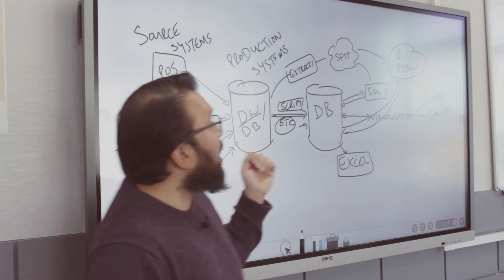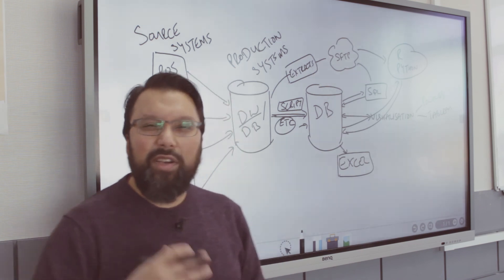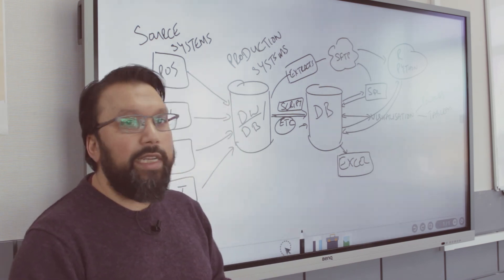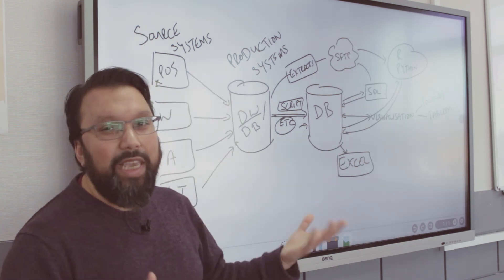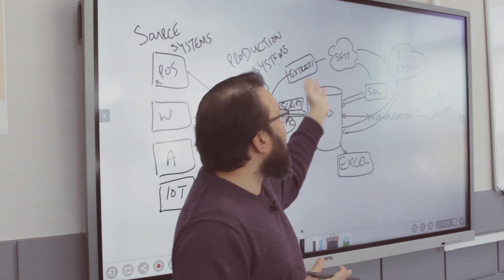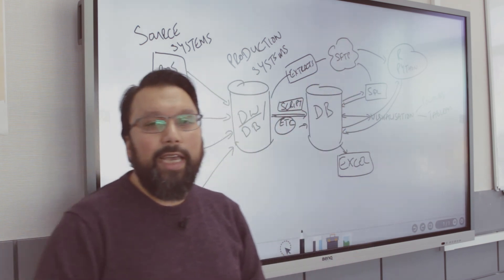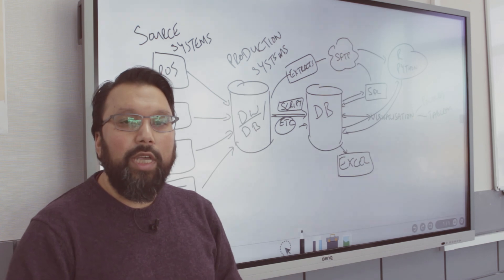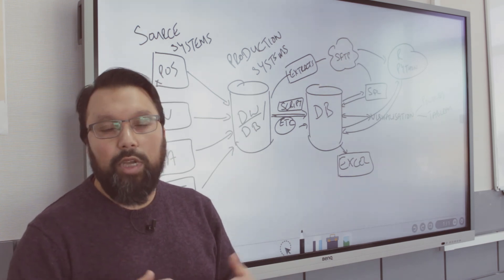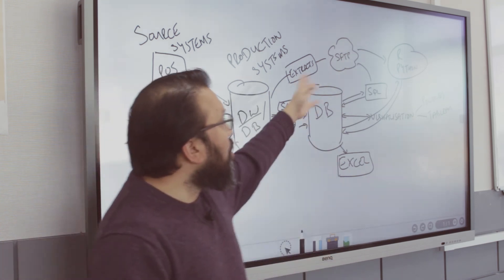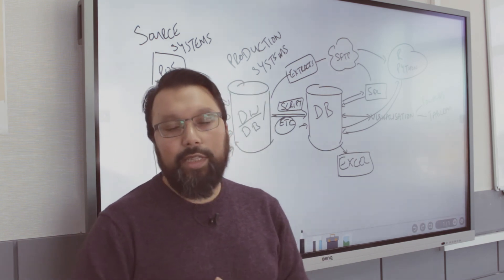As data scientists, what you might end up doing is saying that the reporting data warehouse doesn't have the granularity of data that you need. So you need to go to the source system. So here, if you were to get an extract, you'd get an extract that would be placed into an SFTP or another location, another folder type, network folder type location, where you can pull it with R and Python and analyze that data there.